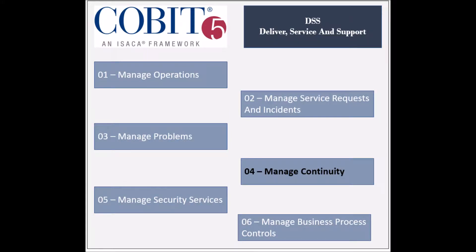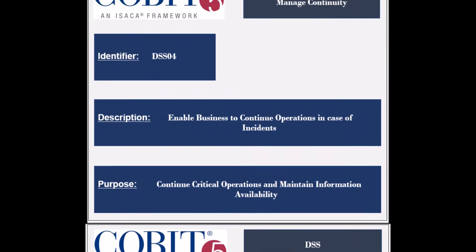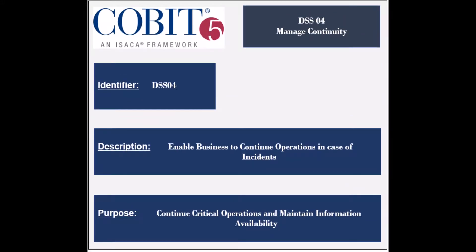The fourth process of the Deliver Service and Support Domain is called Manage Continuity. The identifier of the process is DSS-4. The process ensures that the operation of the critical business processes and IT services is uninterrupted, and a plan to ensure the availability of information should be established.